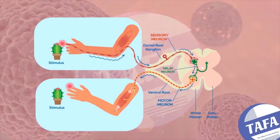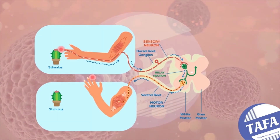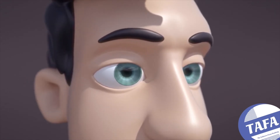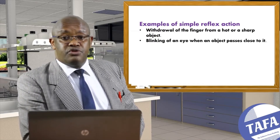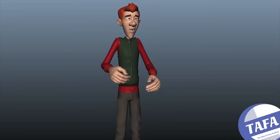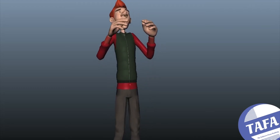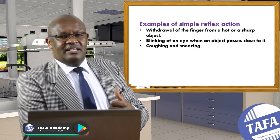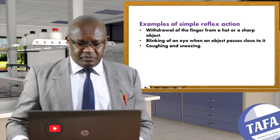One example is withdrawal of a finger from a hot or sharp object. Another is blinking of the eye when an object passes close to it — you close your eyes without thinking when something is thrown at you. Coughing or sneezing is also an example. When something enters your eye causing a reaction, you find yourself sneezing without thinking.